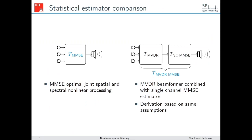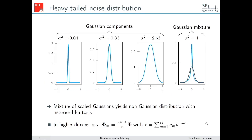We are interested in the potential benefit obtainable with such a non-linear spatial filter, like the GMMSE filter derived by Hendriks et al. For this reason, in our analysis we compare it to a separated setup we call MVDR-MMSE, which combines an MVDR beamformer with a post filter derived under the same distribution assumptions. Our previous work showed that a non-linear spatial filter is beneficial when the noise follows a much heavier-tailed distribution than a Gaussian.